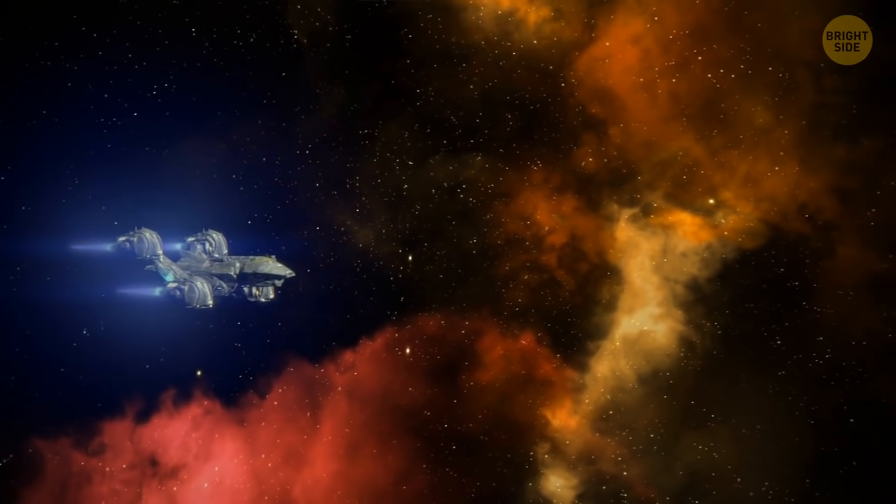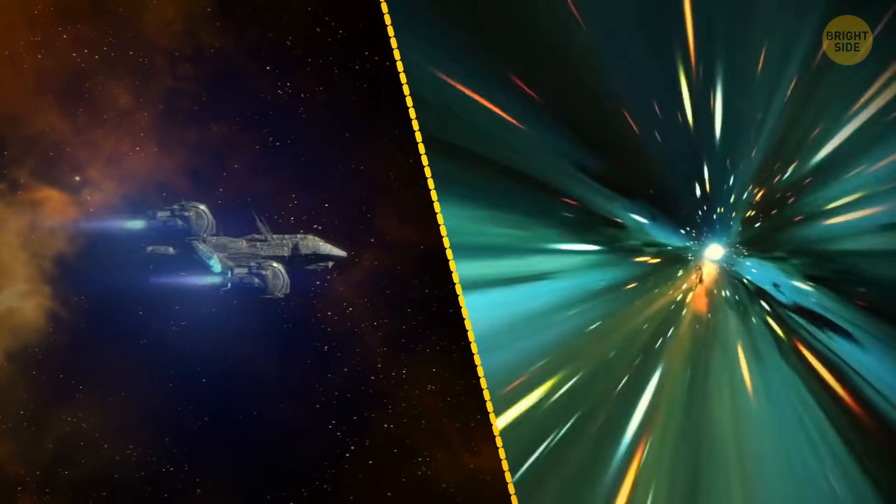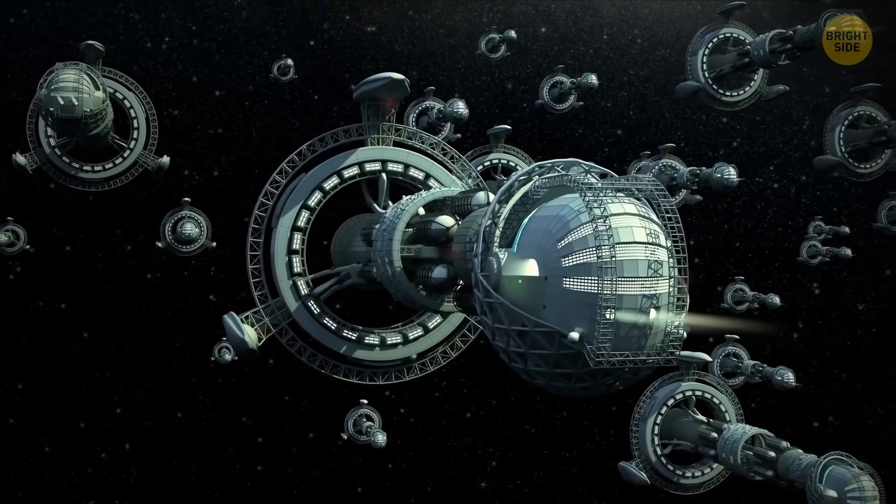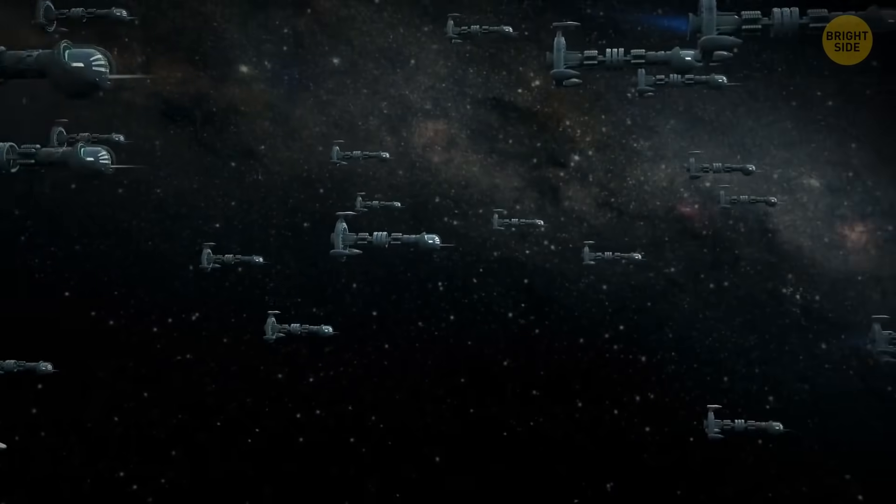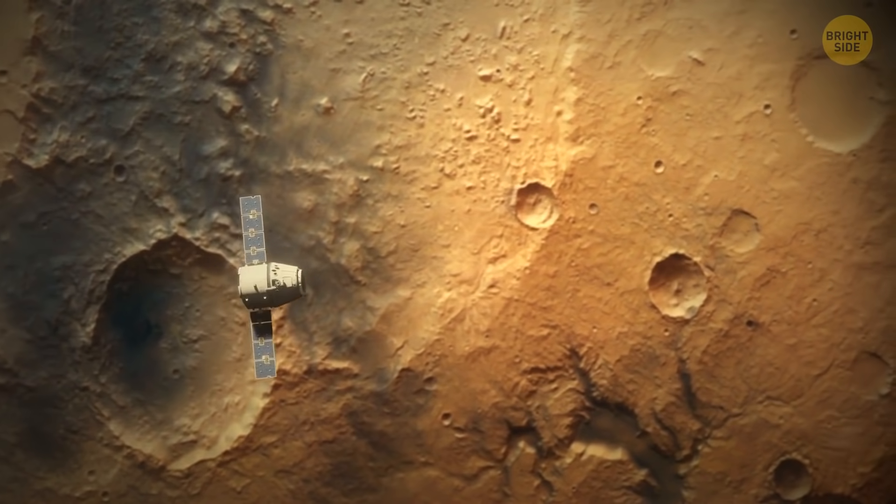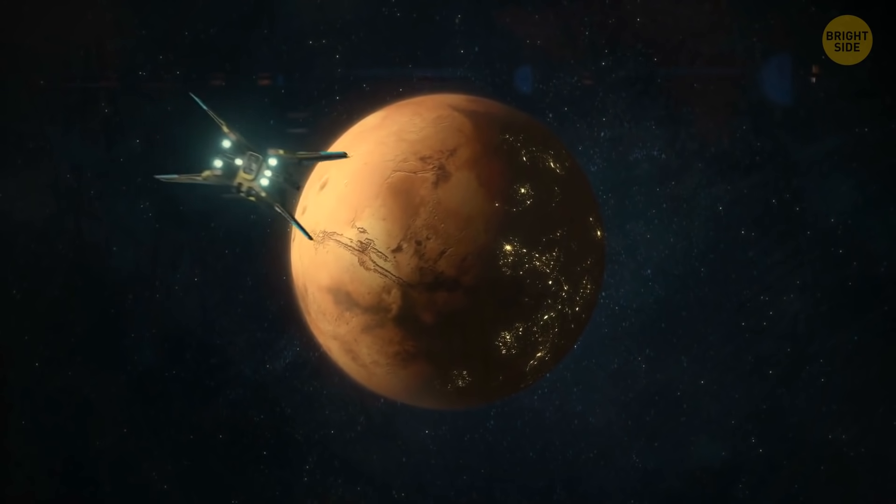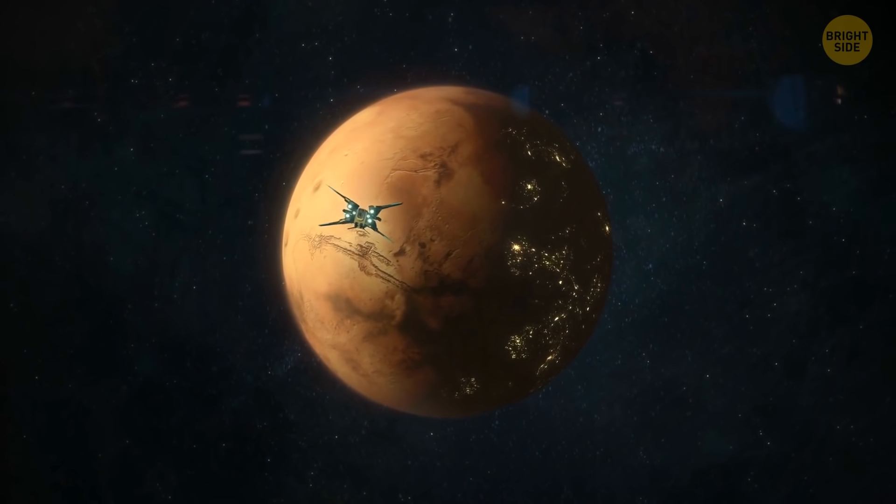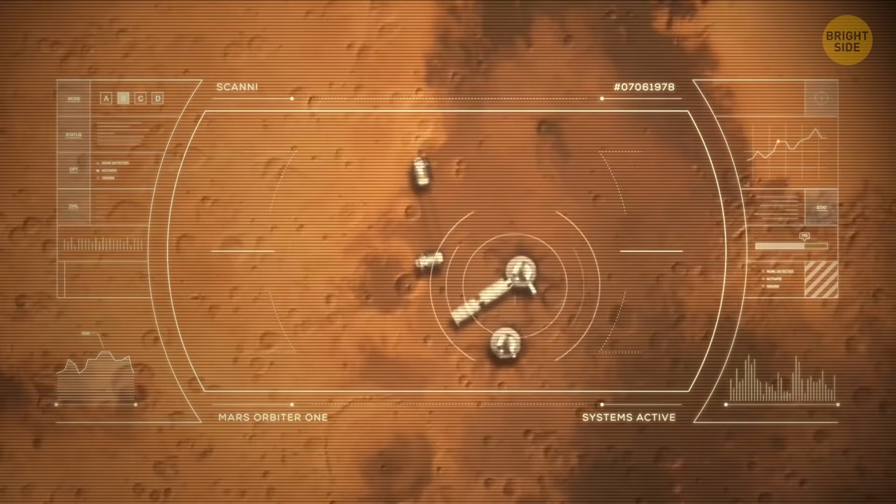Still, an unknown number of years will pass until there's a way to implement warp drive or ion propulsion. We want to make humankind interstellar, but first we need to keep it alive, at least. Now we're actively developing technologies to send the first manned mission to Mars. Colonization of Mars will be the first stage to make our species interstellar. It'll be a kind of rehearsal before colonizing distant planets.